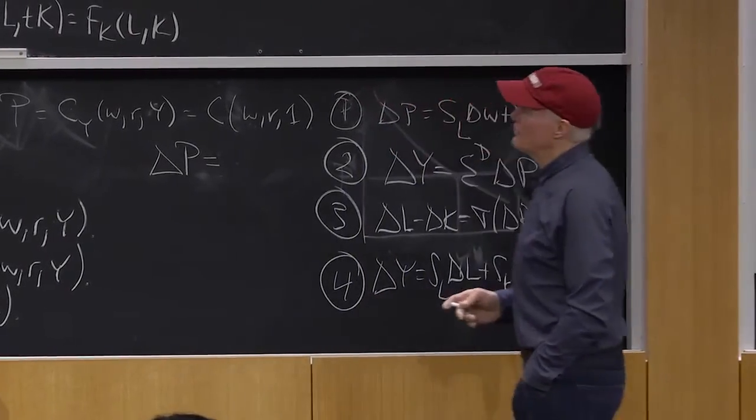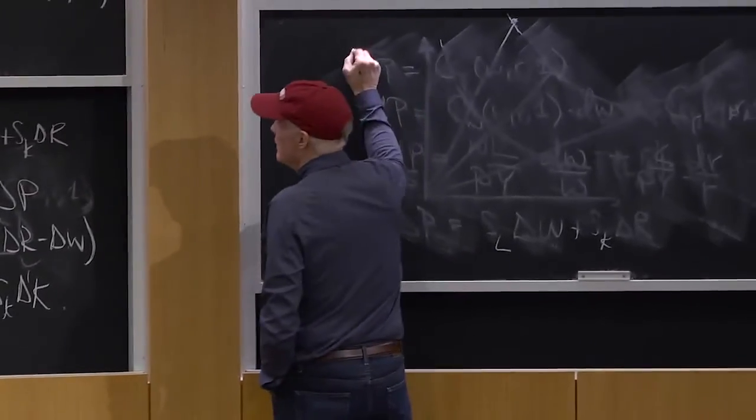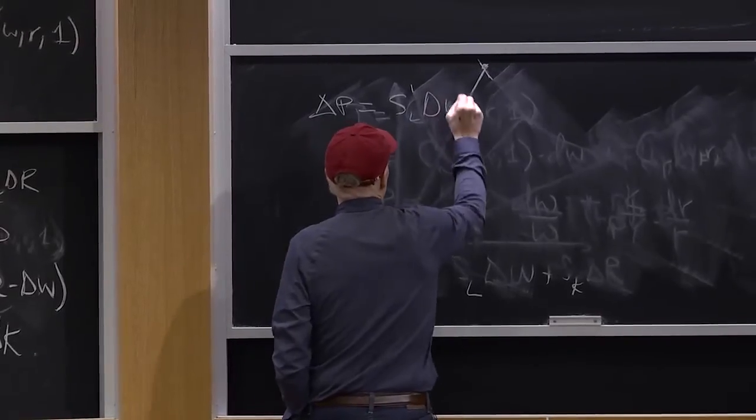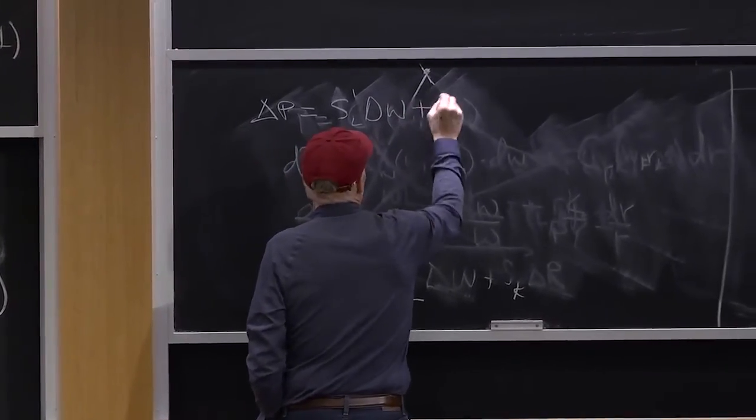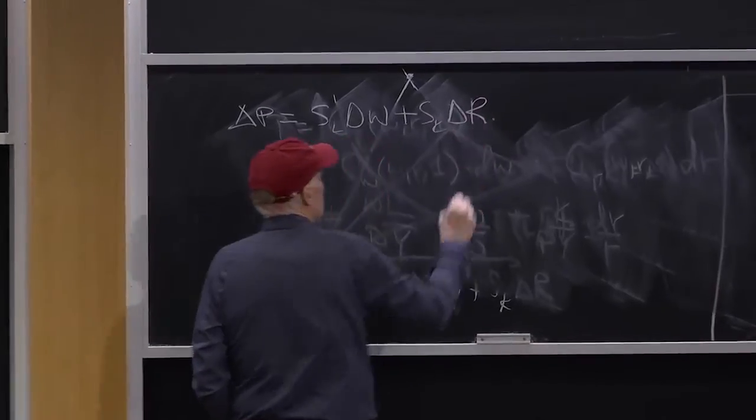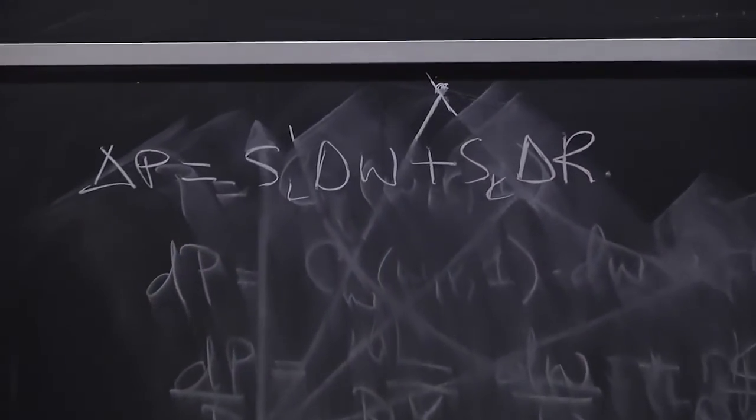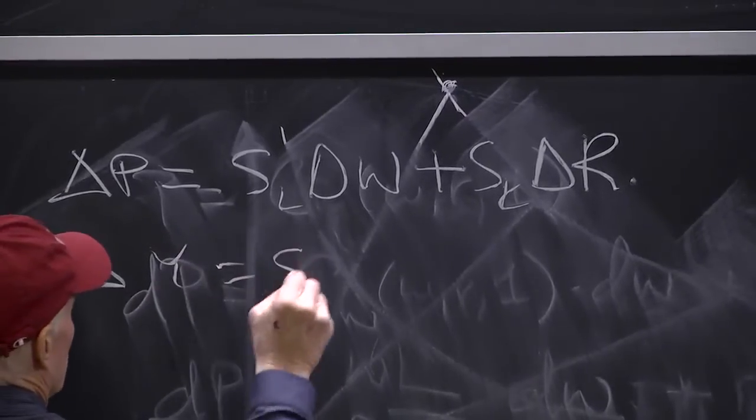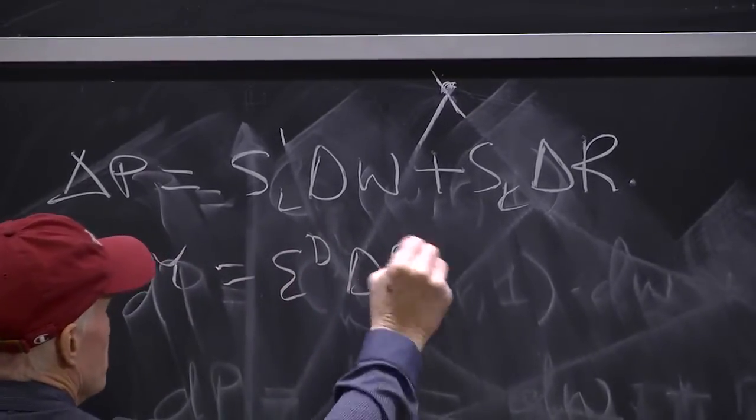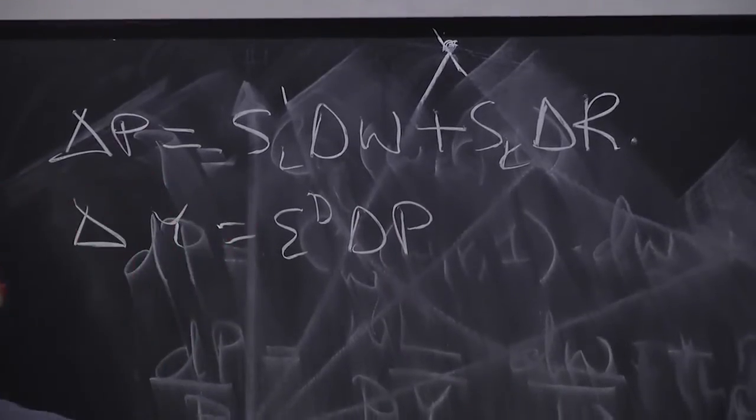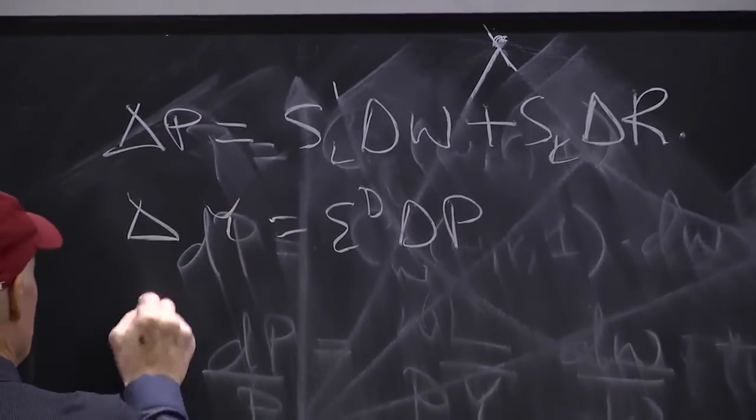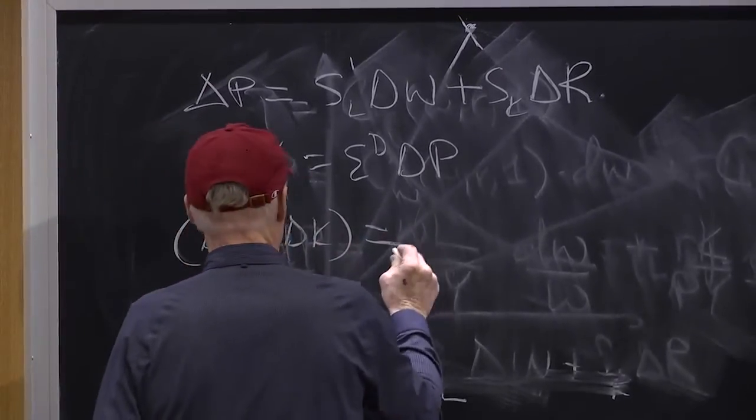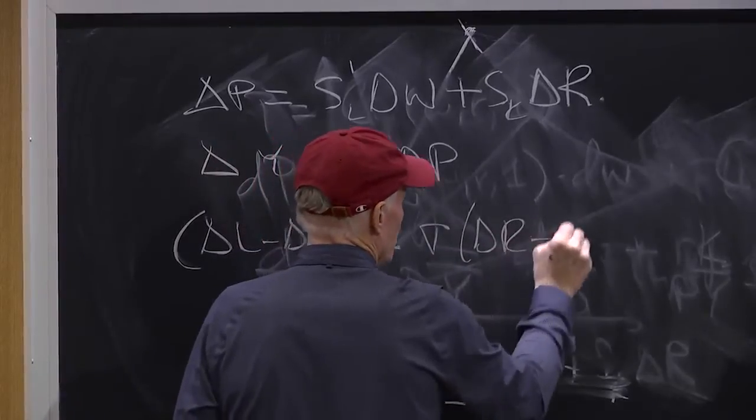Exactly. So our equations are now going to become delta P equals SL delta W plus SK delta R. Delta Y equals epsilon D delta P. That equation is going to be the same. Equation three is going to be delta L minus delta K equals sigma delta R minus delta W.